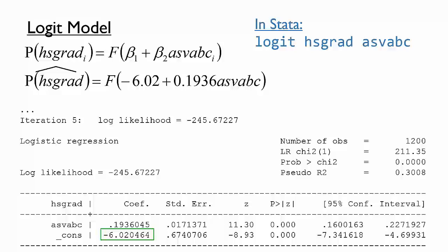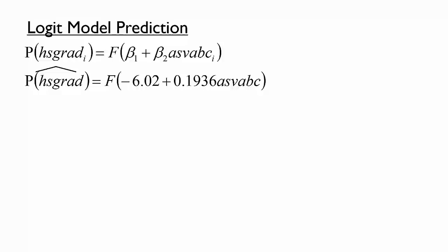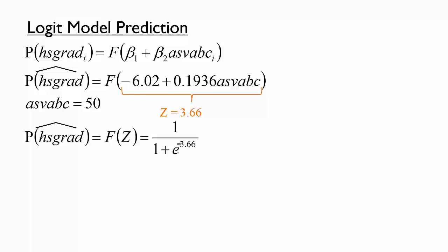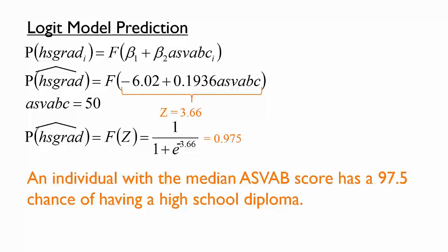Let's try making a prediction with this model. Let's again predict the probability that an individual with an ASVAB score of 50 is a high school graduate. We can plug in 50 for ASVAB C and do this arithmetic to get a value of 3.66 for this expression. Of course, this number is not yet the predicted probability — it is Z, the argument of the logit function. To calculate the predicted probability, we plug Z equals 3.66 into the logit function. This yields a probability of 0.975, so the logit model predicts that an individual with a median ASVAB score has a 97.5% chance of having a high school diploma.